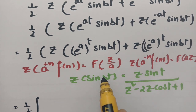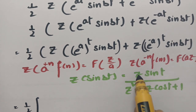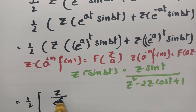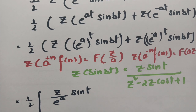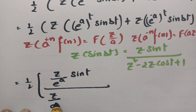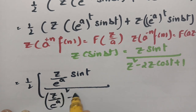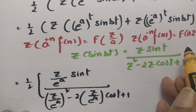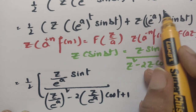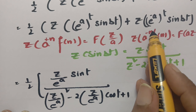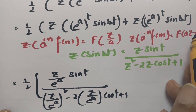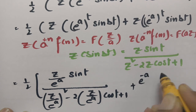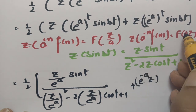So the Z transform of sin(bt): in place of Z I am going to replace Z by a, so a is nothing but e power a, giving Z by e power a. Into sin(t) by: this is Z by e power a whole square minus 2 times of Z by e power a into cos(t) plus 1. And here since it is e power minus at, if there is minus we have to multiply a with Z, so we replace Z by a into Z where a is e power minus a, giving e power minus a into Z.